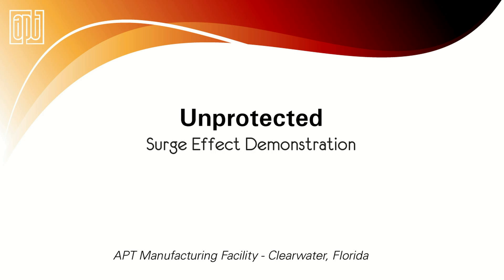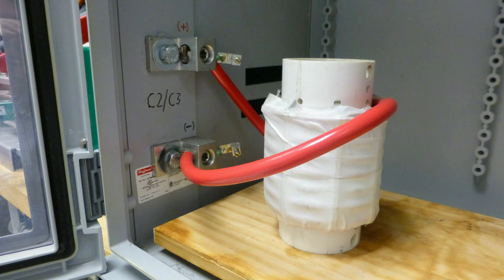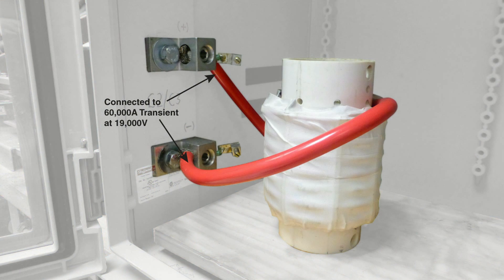This simulation shows what can happen to a motor when it is subjected to a 60,000 amp transient at 19,000 volts with no surge protection.